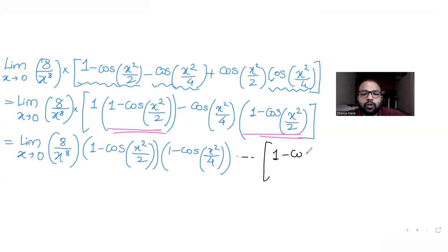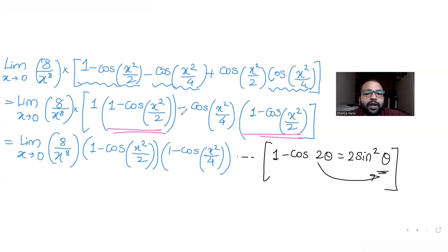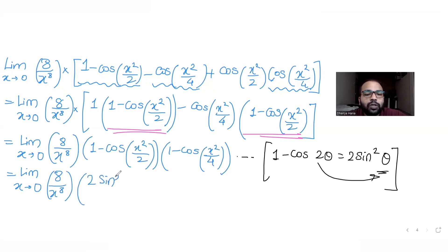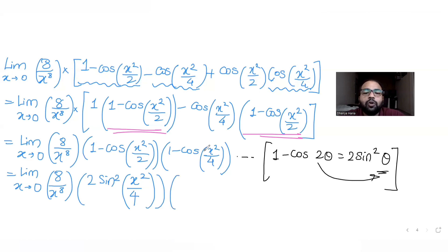We use the identity: 1 minus cos(2θ) = 2sin²(θ). Applying this, 1 minus cos(x²/2) becomes 2sin²(x²/4), and 1 minus cos(x²/4) also becomes 2sin²(x²/8). So both cosine terms are converted into sine-squared form using this half-angle identity.